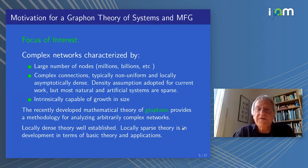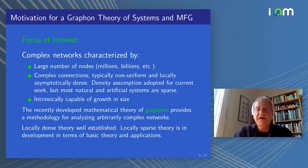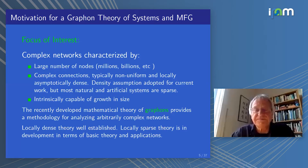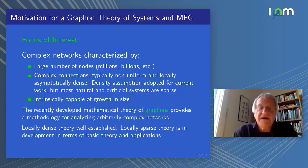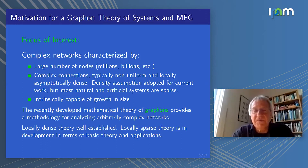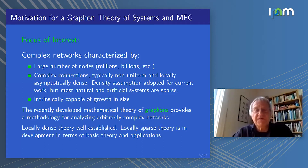Complex connections are typically non-uniform and locally asymptotically dense. The density assumption is adopted in our research as described in today's talk. Most natural and artificial systems, it must be conceded, are sparse — a fact we cannot fully address at present, although we intend to do so. A feature of the networks we're interested in is that they're intrinsically capable of growth in size.